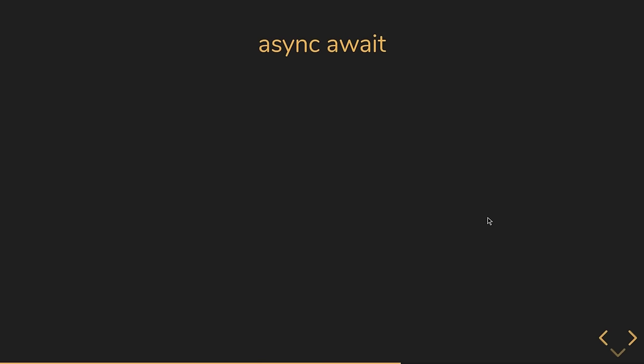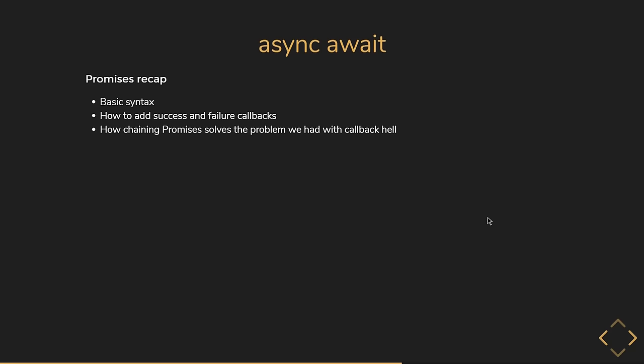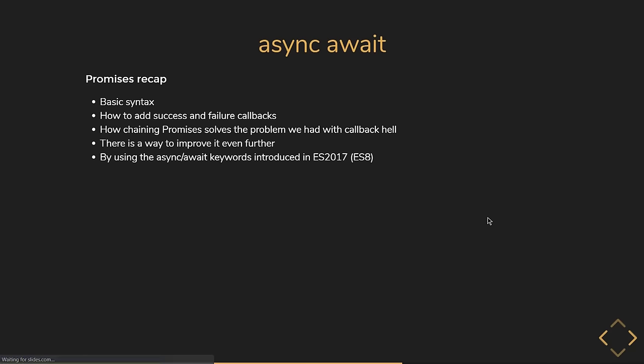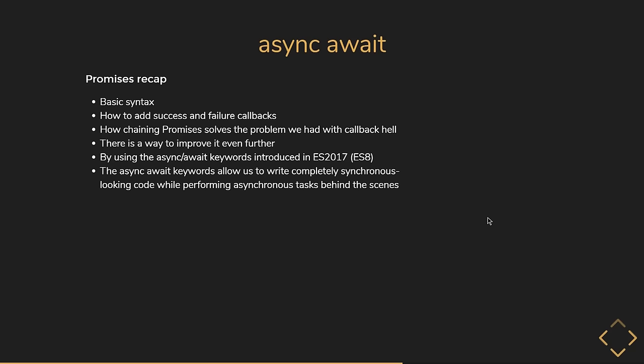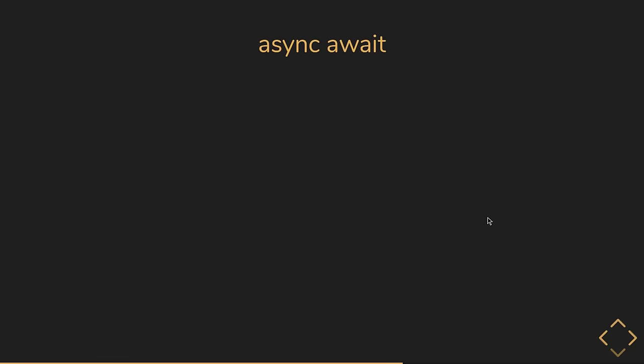In the previous two lectures, we learned about promises — the basic syntax, success and failure callbacks, and how chaining promises resolves callback hell. Although promises improve readability, there is a way to improve it even further: using the async/await keywords introduced in ES2017. The async/await keywords allow us to write completely synchronous-looking code while performing asynchronous tasks behind the scenes.